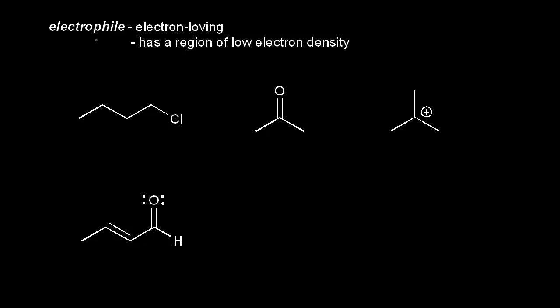Now let's look at electrophiles. An electrophile is electron-loving. And since electrons are negatively charged, we're going to think about an electrophile as having a region of low electron density. So it could have a full positive charge, because a positive charge will be attracted to electrons, or you could be talking about a partial positive charge.